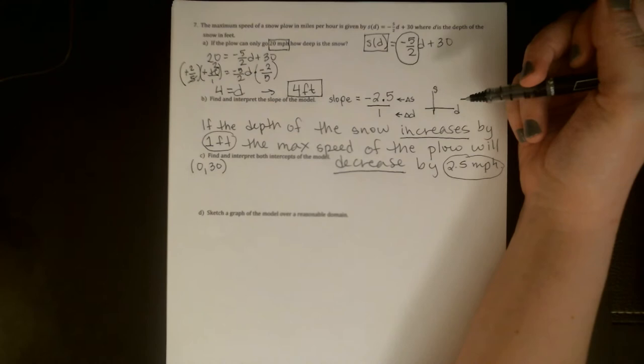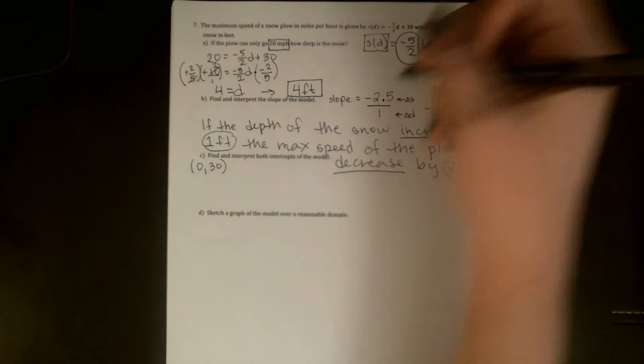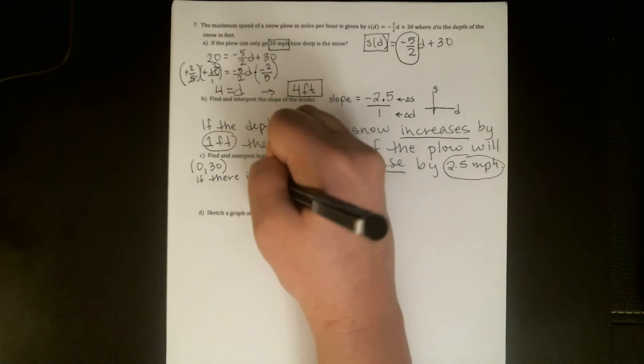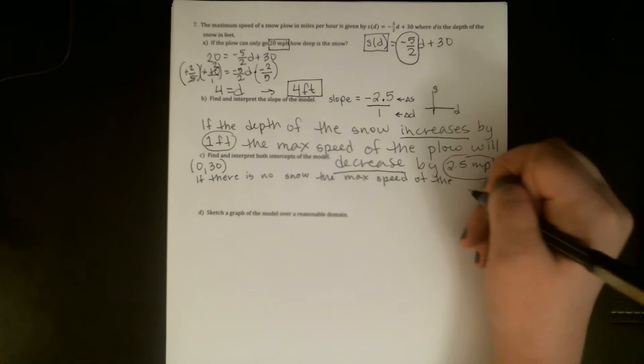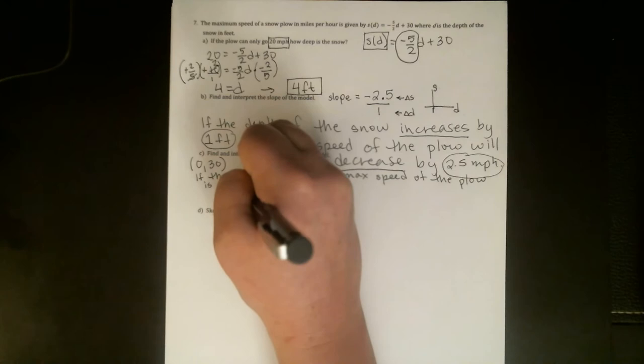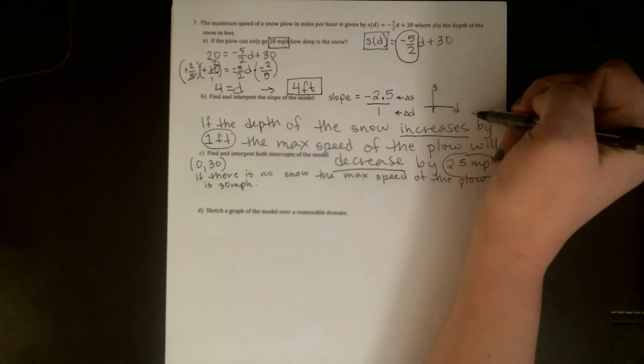This interprets to mean that when the depth of the snow is zero feet, the plow can go a maximum of 30 miles per hour. I'm really looking for that understanding that an intercept has two coordinates. So I would do the little bit of extra writing to tell me that you know that the zero is zero feet. So if there is no snow, the max speed of the plow is 30 miles per hour. We'll see if we can squeeze these in the little spot I gave myself.